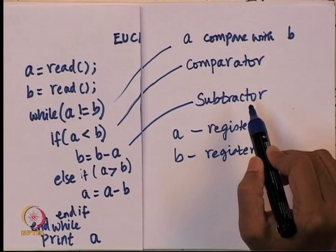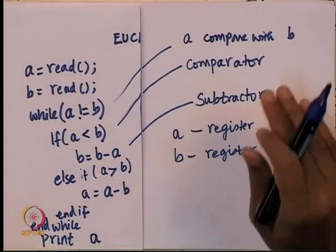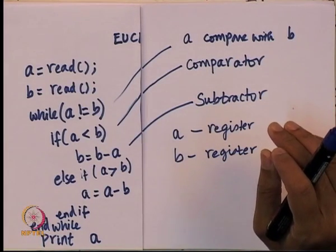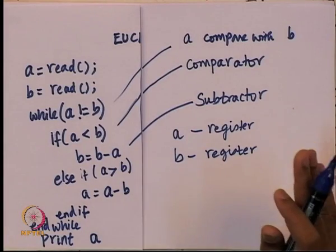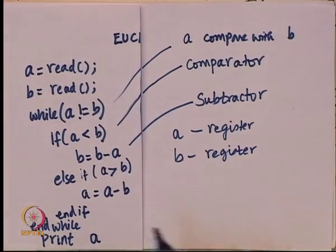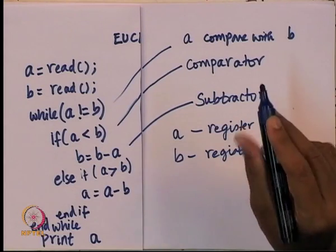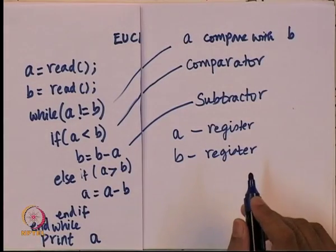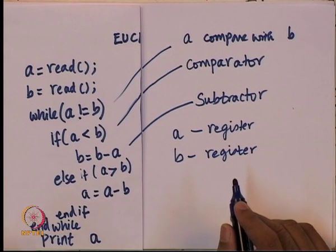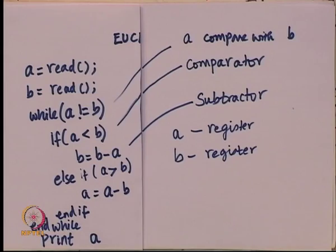So far what I have realized is: I will need some place to store A and B, so for A I am going to have a register and for B I am going to have a register. Registers are a bunch of flip-flops which can take parallel in and give parallel out. There are several comparison operations happening — A not equal to B, A less than B, A greater than B — so I need a comparator and two registers, one for A and one for B.